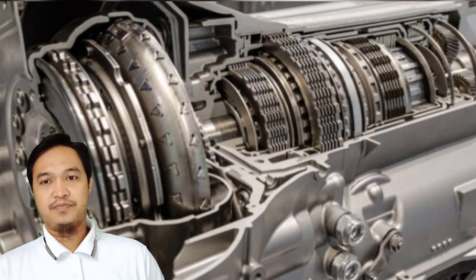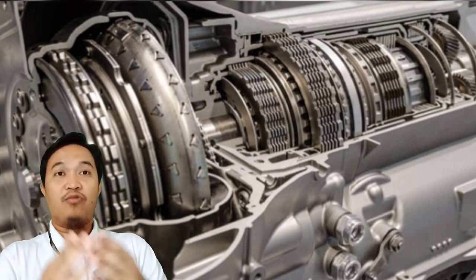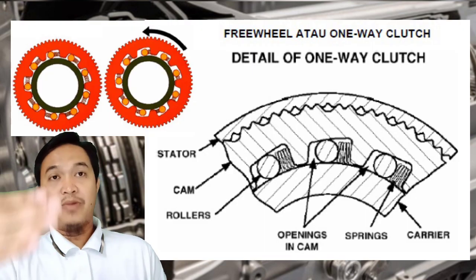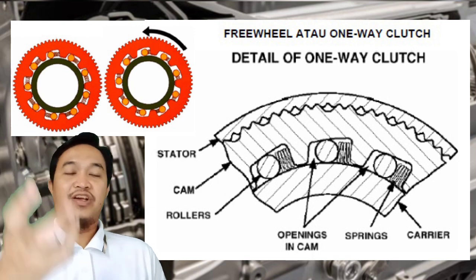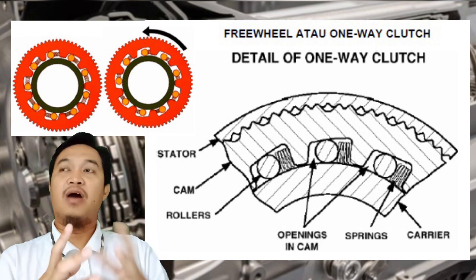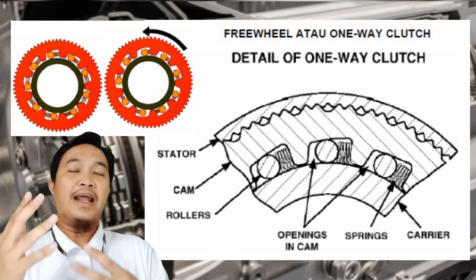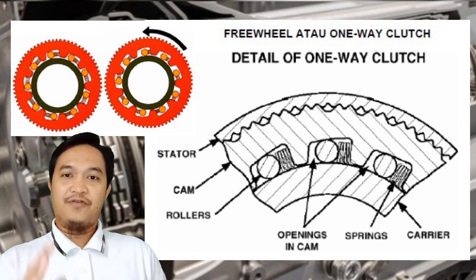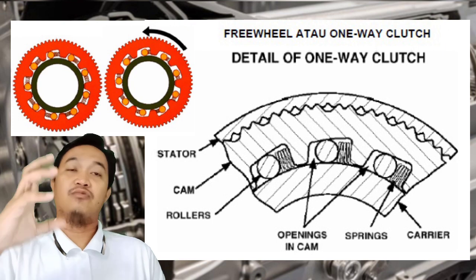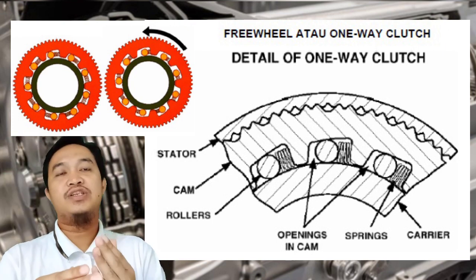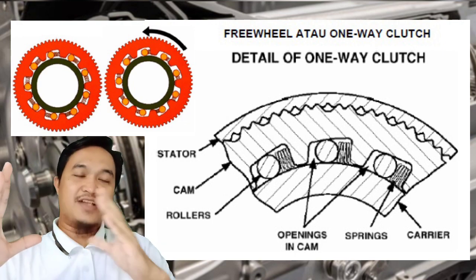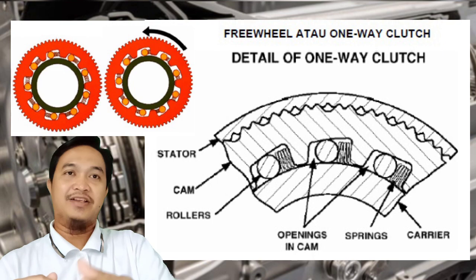Torque converter modern dilengkapi dengan freewheel atau one-way clutch. Ketika mendapat beban berat, stator cenderung terbawa beban sehingun putarannya bisa kalah dan berputar balik. Dengan adanya freewheel one-way clutch, stator tidak berputar balik sehingga menyumbang torsi yang lebih besar. Turbin yang memukul-mukul stator membuat stator tetap diam karena ada one-way clutch.